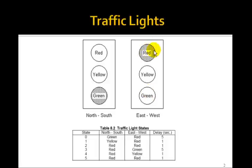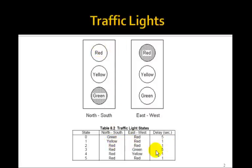East-west being red and north-south being green — we'll call that state S0, and we'll stay in there for five seconds. We're going to assume you have very fast race cars to get through. Then in state S1, north-south will go to yellow. We'll have yellow and red for one second, then red and red for one second, then east-west will go to green and north-south will go to red. We'll stay in the red-green for five seconds.